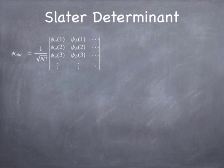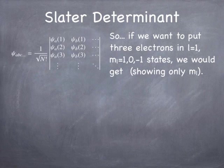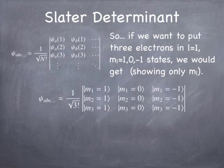If I have a bunch of quantum states A, B, C, D, E and a bunch of particles 1, 2, 3, 4, 5, and I want to form a totally anti-symmetric combination of the wave functions using those particles, I can form what's called a Slater determinant. I put the wave functions in the columns and the particles in the rows, and then simply calculate the determinant. For example, if we want to put three electrons in the L=1 state with different values of M_L — 1, 0, and −1 — we'd set it up like this.